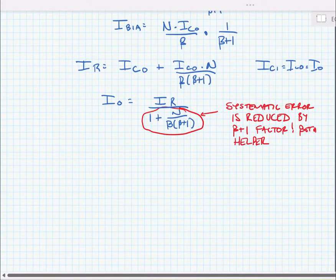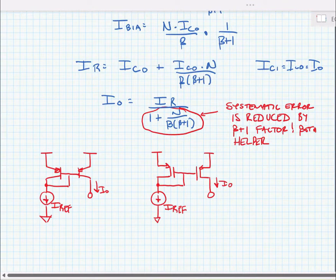One thing that we haven't shown - we've shown only NPN current mirrors and NMOS current mirrors. It's important to note that we can do this with a PNP or a PMOS as well. Here we have examples of a PNP current mirror and a PMOS current mirror.